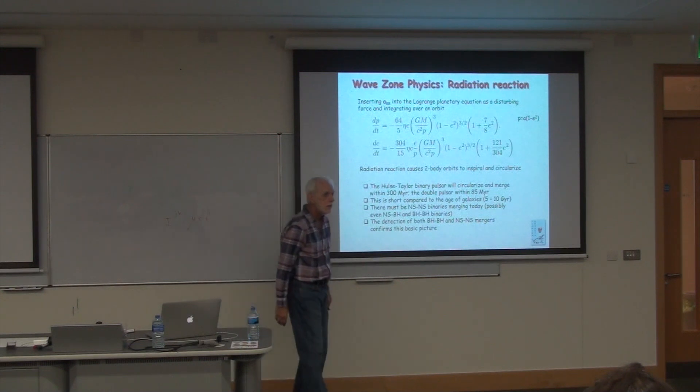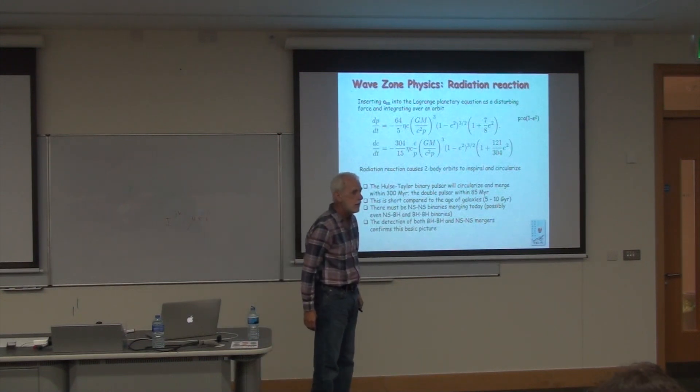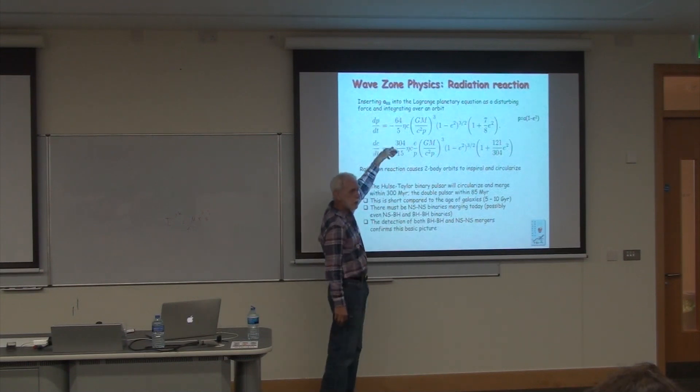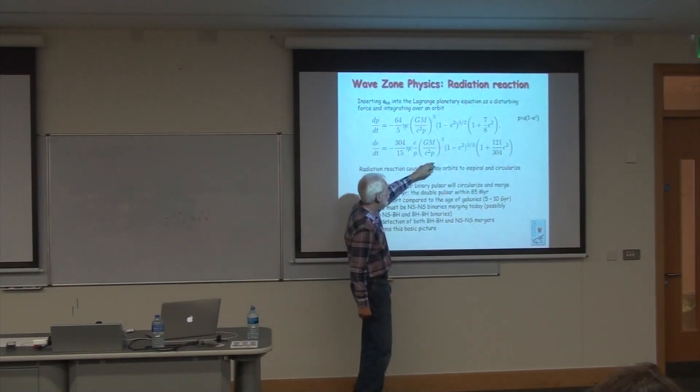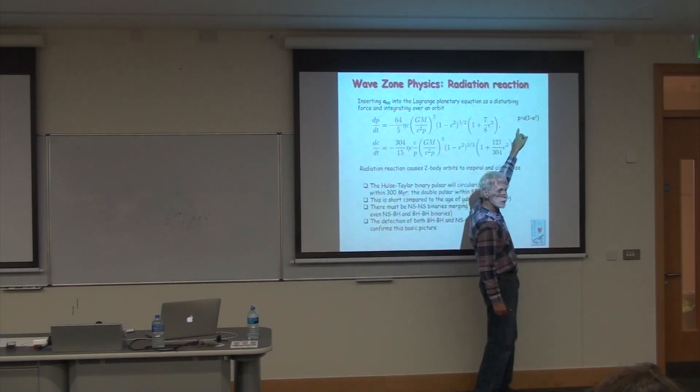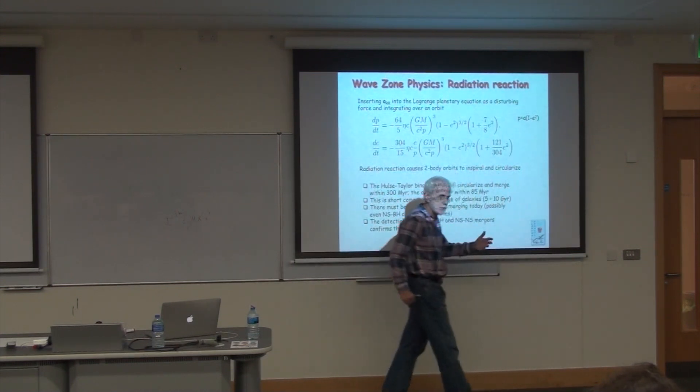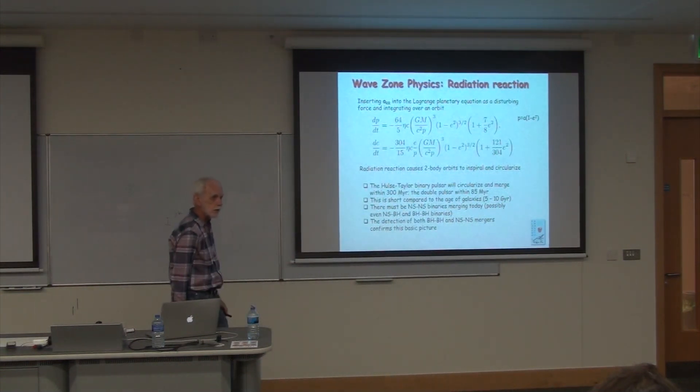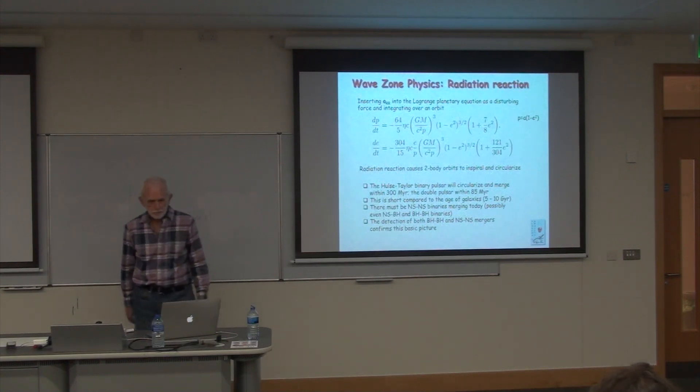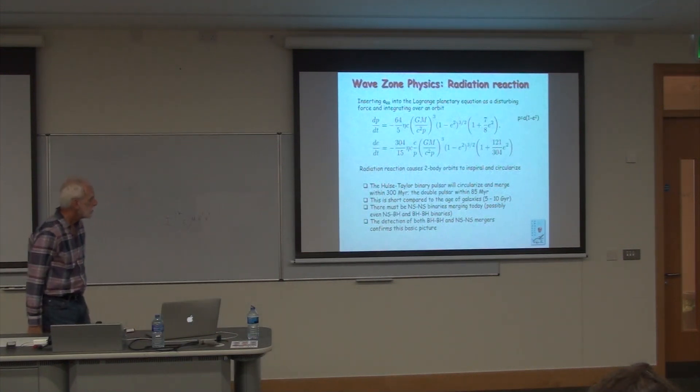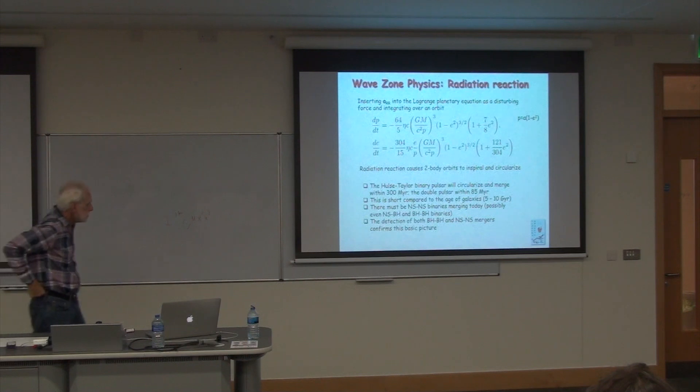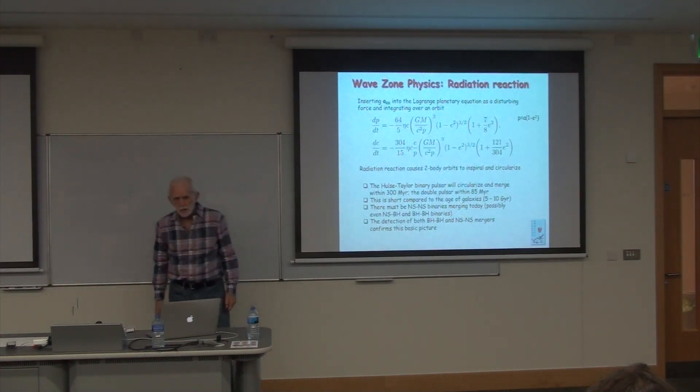Of course, this is a statement that was put on this slide long before the detections, but I left it there. Now I say the detection of both of these systems really says that this picture's right, that there are systems that decayed fast enough that they're merging today, and yes, we've now detected such systems. You've heard from other speakers lots more about the actual detections, so I'm not going to go there. This is just the quadrupole formula, Newtonian order in radiation reaction. There are even higher order post-Newtonian corrections to these expressions if you wish. Those expressions exist, but I'm just showing the lowest order, leading order. Any questions?